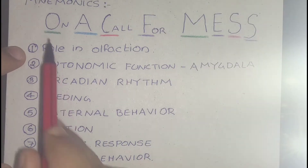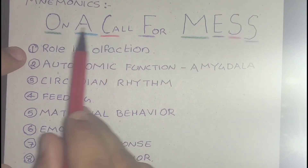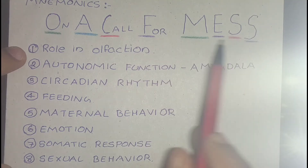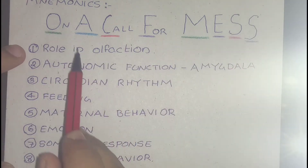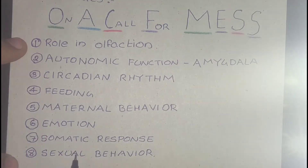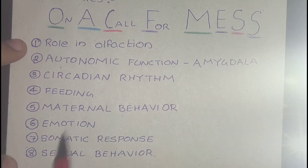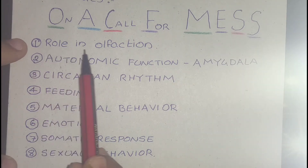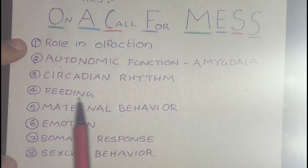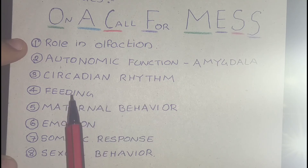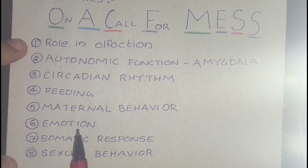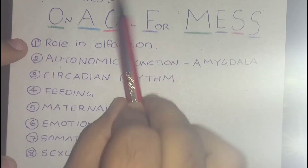So the mnemonic is 'On A Call For Mess,' and all these are the functions of the limbic system. To summarize: the limbic system has a role in olfaction, autonomic function, circadian rhythm, feeding, maternal behavior, emotion, somatic response, and sexual behavior.